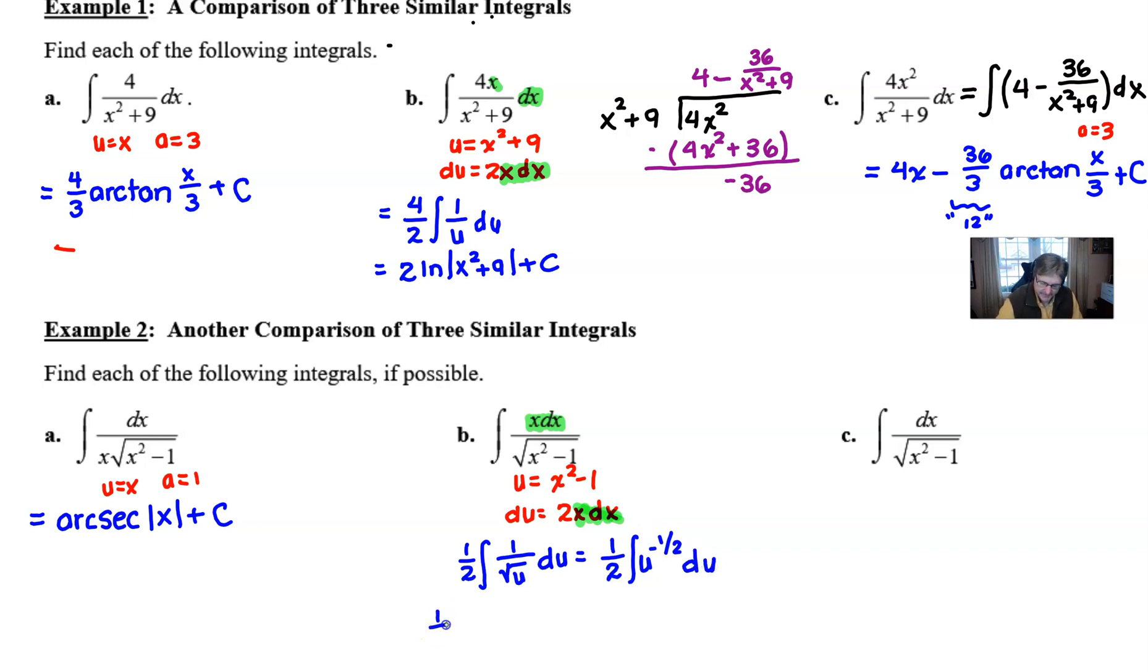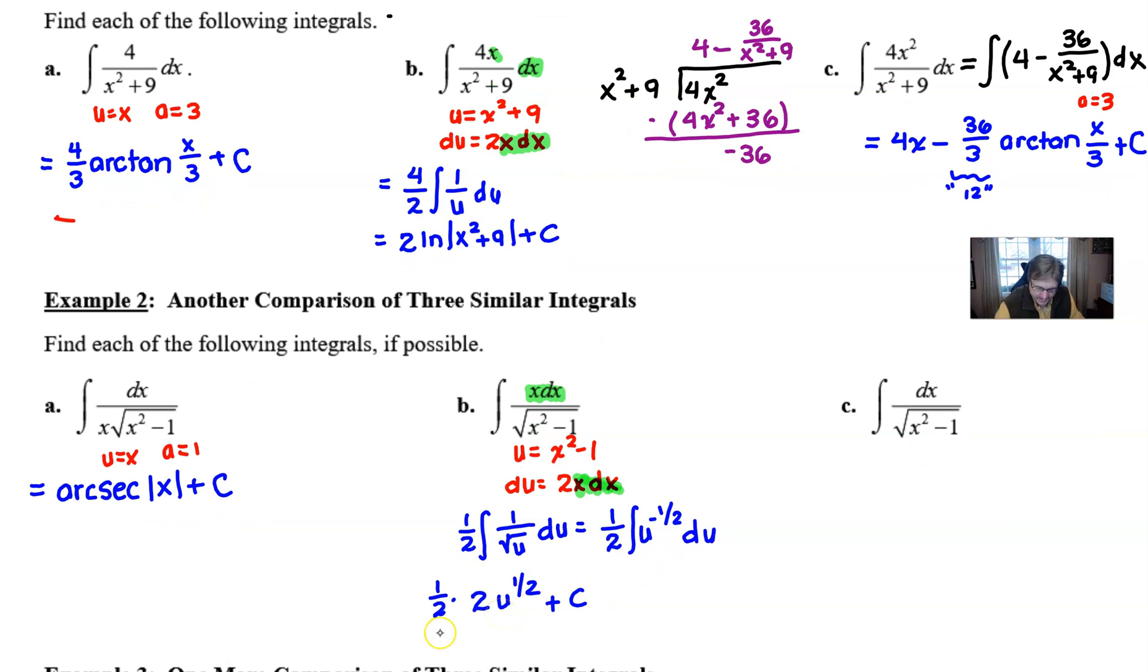All right. So we have this half in front. We integrate U to the negative half. That gives us U to the positive half divided by a half or times two plus the C. And then we can finish this up by simply canceling our twos and then back substituting. And interestingly enough, we have the square root of X squared minus one as our answer with our plus C. And that's all that you have to do with this one. And it's very amazing how the presence of that X in the numerator completely changed not only the approach to integrate, but the final answer looks drastically different as well.